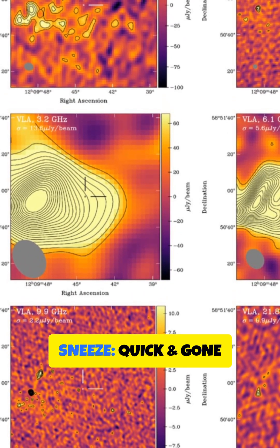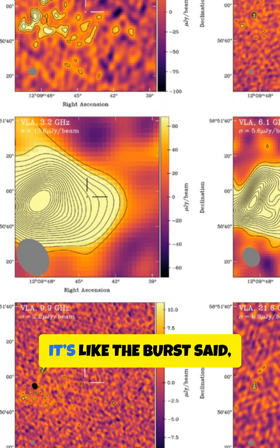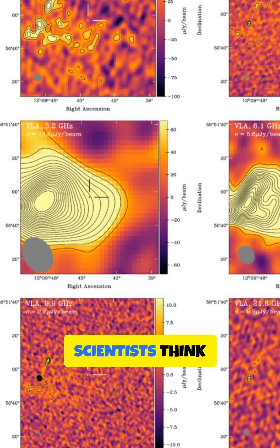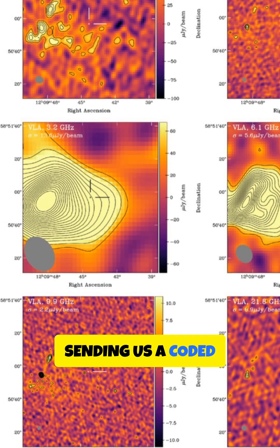Normally these bursts are like a cosmic sneeze—quick and gone in a flash, nature bless you. But this one? It's like the burst said, hold my beer, I'm just getting started. Those pulses were so perfectly spaced, scientists think it's like a pulsar sending us a coded cosmic message.